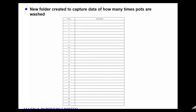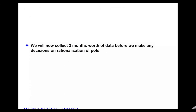There's also a tally chart — a five-bar gate recording how many times each pot gets washed and how often it's used. They'll collect two months of data before making any decisions about rationalising pots. Part of what they're doing is setting up a system that enables them to rationalise pots, remove ones they don't need, sell them for scrap, spot if a particular size is being overused, and introduce more stock where it's needed.